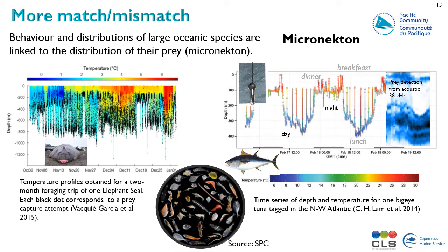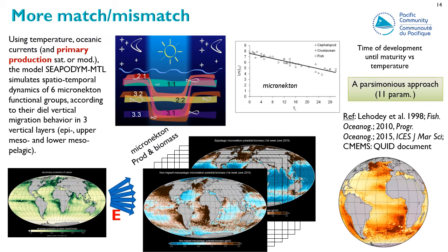For tuna, we have less detail, but the foraging pattern is similar, at least during the day. Unfortunately, we have little information or knowledge on mesopelagic species, despite them representing the largest biomass on Earth. As with zooplankton, I have been working with colleagues on the modeling of these foraging species. Today, we can propose a model representing six groups of epipelagic and mesopelagic micronekton, defined according to their vertical migration behavior and macro-ecological relationships linking development time to water temperature.